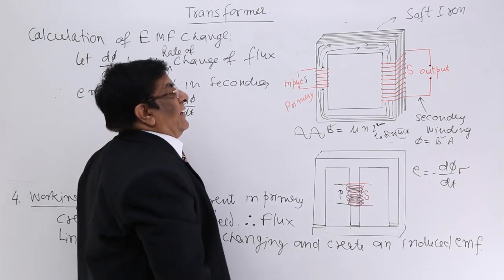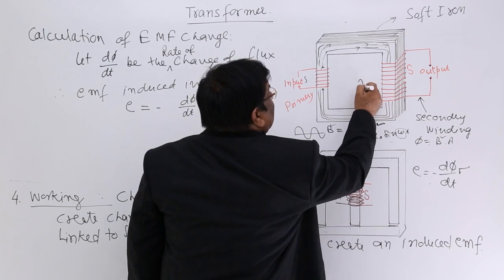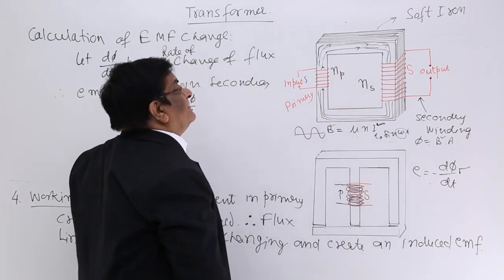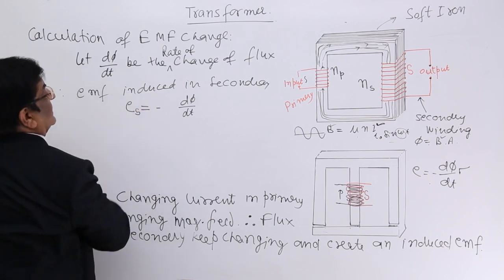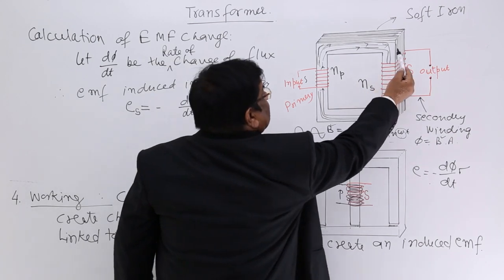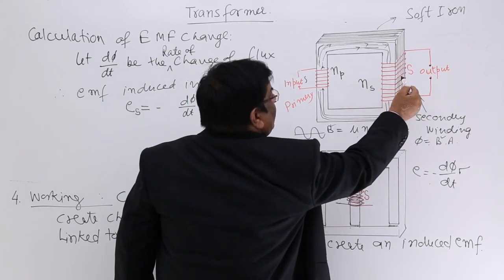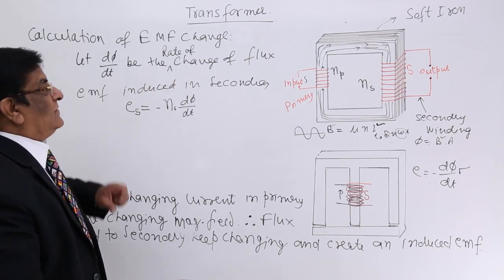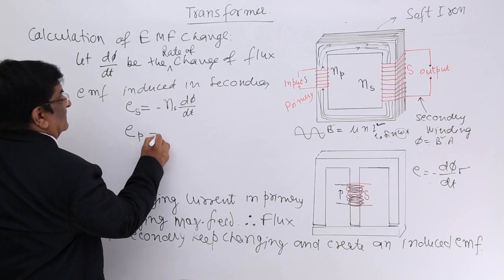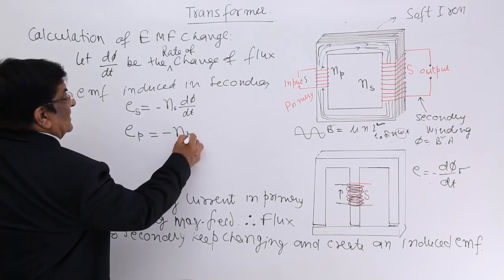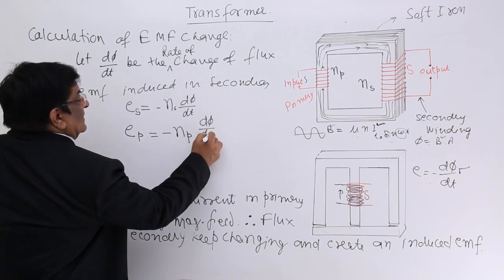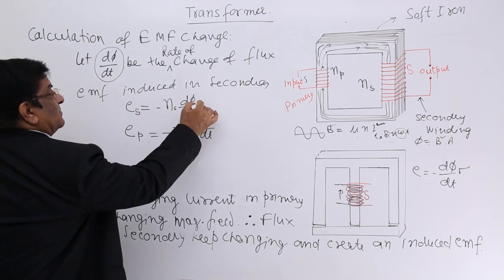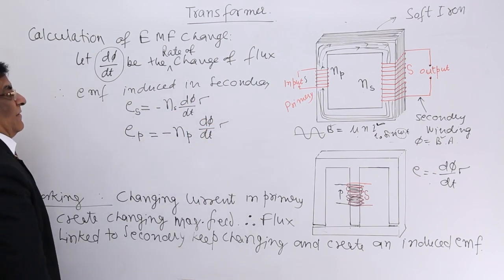Similarly, the EMF across the primary at any moment is Nₚ × (d𝜙/dt). Dividing the two expressions, the d𝜙/dt cancels and we get: Eₛ / Eₚ = Nₛ / Nₚ. This is called the transformer ratio or transformation ratio. Therefore, the potential difference across the secondary equals (Nₛ / Nₚ) multiplied by the EMF across the primary. If Nₛ is greater than Nₚ, we receive a larger Eₛ than Eₚ; if Nₛ is less than Nₚ, then Eₛ is less than Eₚ.